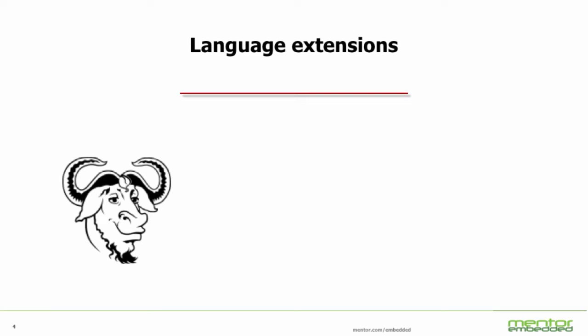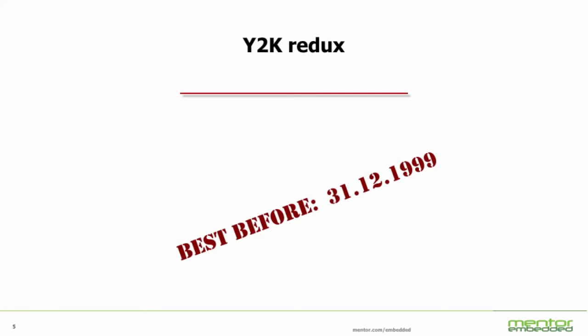Following that, we'll be looking at language extensions. Embedded software is quite specialist and therefore there are certain extensions to the language which are very relevant to embedded, or might even say specific to embedded. The question is, should we be using extensions to standardised languages, or should we stick with the standard as it's published?